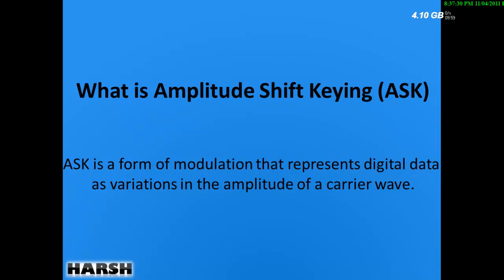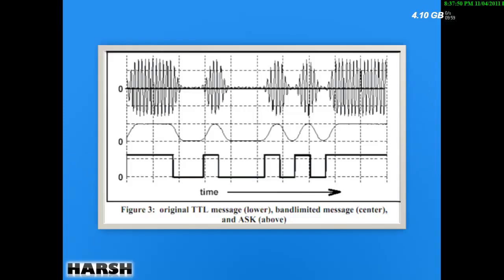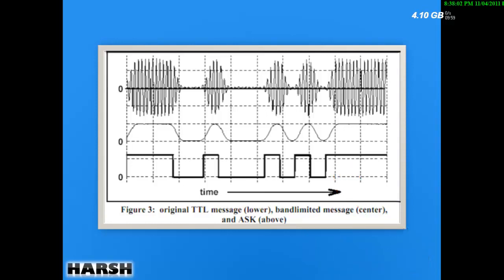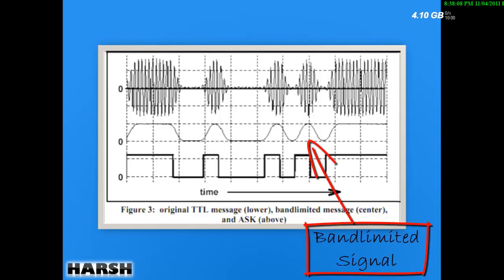What is Amplitude Shift Keying? ASK, in short form, is a form of modulation that represents digital data as the variation of amplitude of a carrier wave. As the definition says, while modulating a digital signal, zero has less amplitude and one has greater amplitude. You can see the third waveform — that is my data, something like 1 1 0 1 0 0 1 0 1 0. The second waveform is the band-limited signal, which has some slopes because it's band-limited.